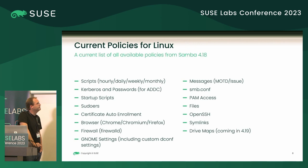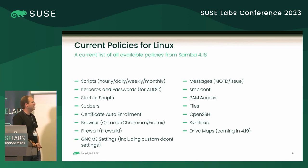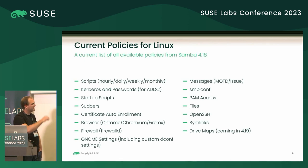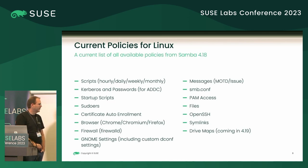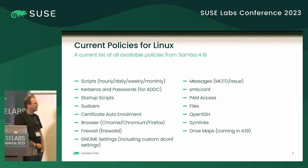The current policies available as of Samba 4.18 include: scripts for executing at various intervals, Kerberos and password policies for Samba's AD DC, startup scripts, sudoers policies, certificate auto-enrollment, browser policies for Chrome, Chromium, and Firefox, FirewallD policies, GNOME settings including dconf custom settings, message of the day and issue policies, smb.conf, PAM access policies, file distribution, OpenSSH, symlinks. Drive Maps is coming in the next version of Samba — not released yet. Drive Maps mount SMB shares in a similar way to how Windows users expect them to be provided on their systems.